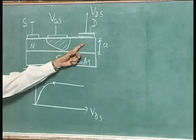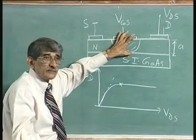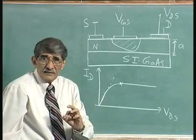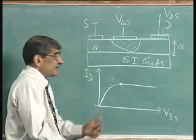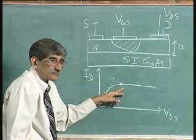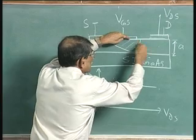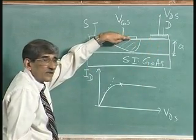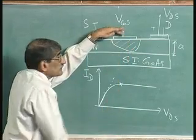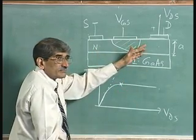Even though VDS changes beyond VDSAT, the voltage across the channel portion does not change, because if it were increasing, the channel would have to widen, but that would cause the current to fall. So it does not change. The question is: where has the remaining applied voltage gone? This extra voltage appears across the two junctions — the Schottky barrier junction — as a reverse bias. It is like a diode, so that dynamic equilibrium is reached.